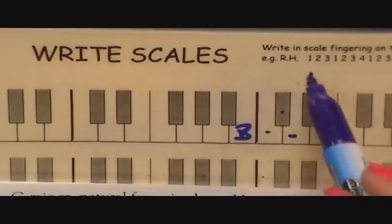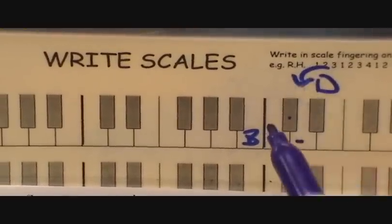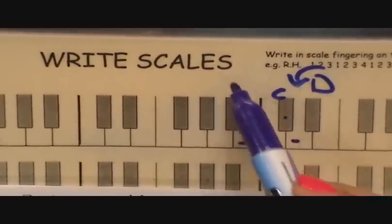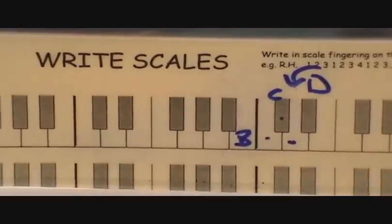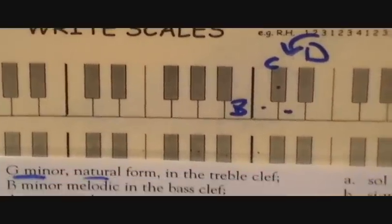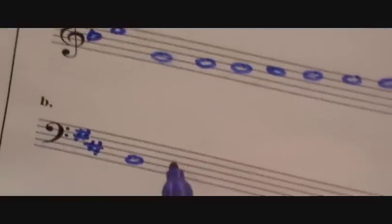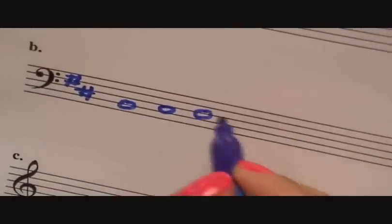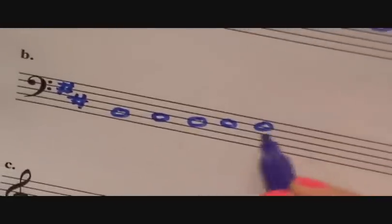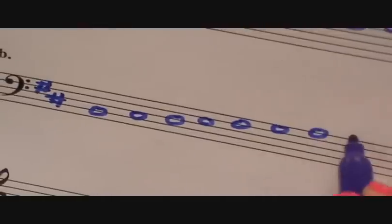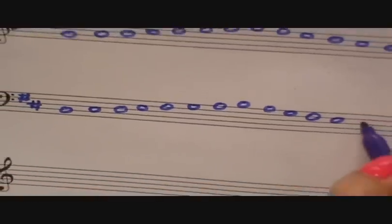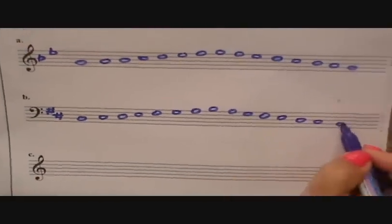So what comes before D in the alphabet? C. So we're going to say the rhyme: Father, Charles, stop. So then let's start writing F, C. Let's go back to the question, B. So let's start writing. Start on B, and I'll give it enough space in case you have to write an accidental. C, D, E, F sharp, G, A, B, and come back down.